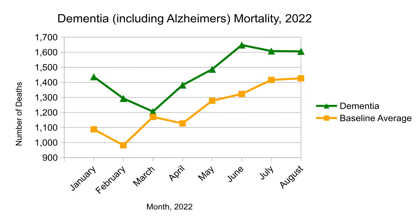Dementia has been one of the biggest contributors to excess deaths this year. It comes in many forms, the most common being Alzheimer's disease, which is a degenerative brain disease caused by nerve cell death resulting in shrinkage of the brain. Physical activity and social engagement are protective against developing dementia, while obesity, smoking, high blood pressure, depression, and diabetes are all linked to an increased risk.